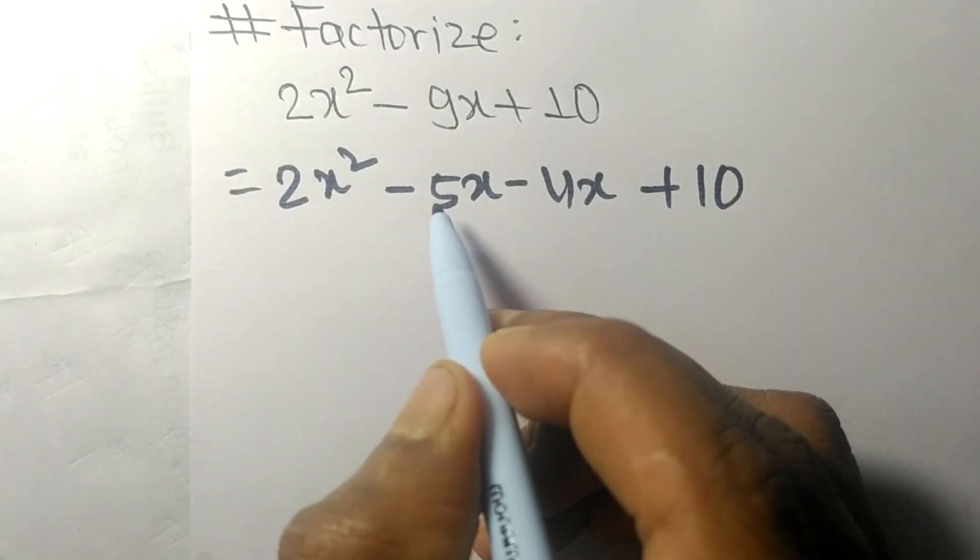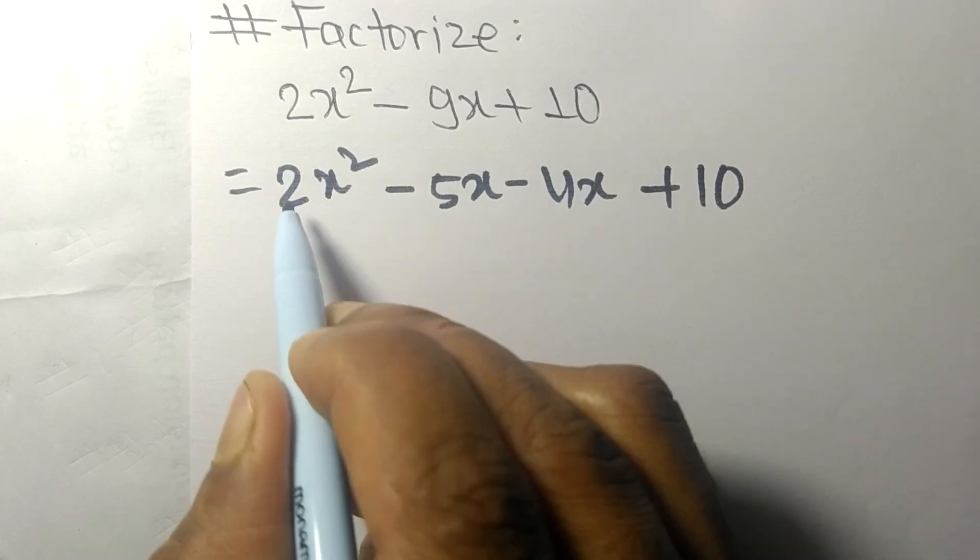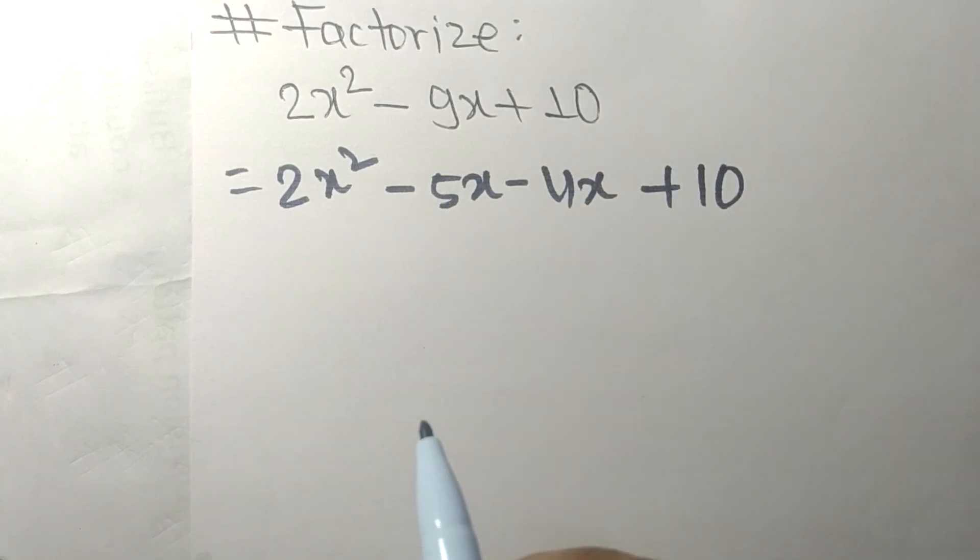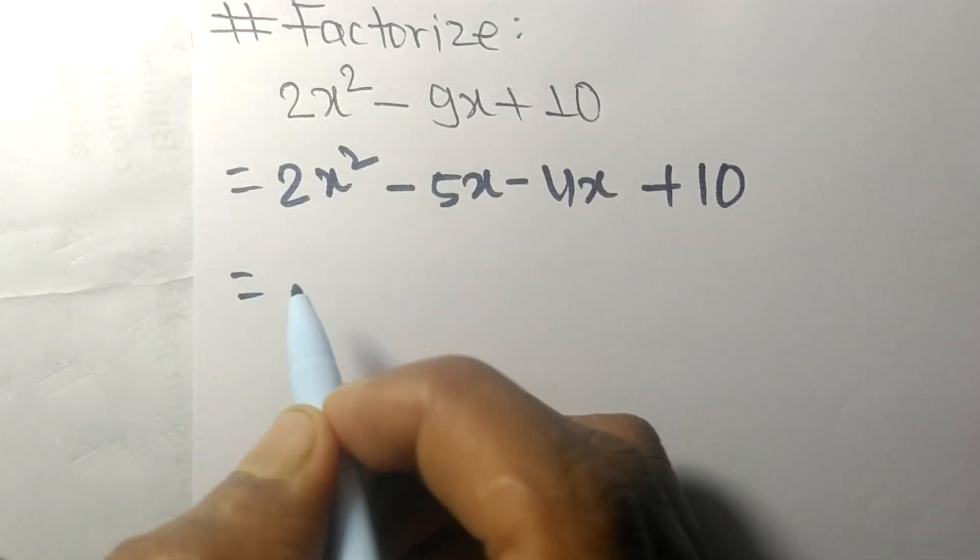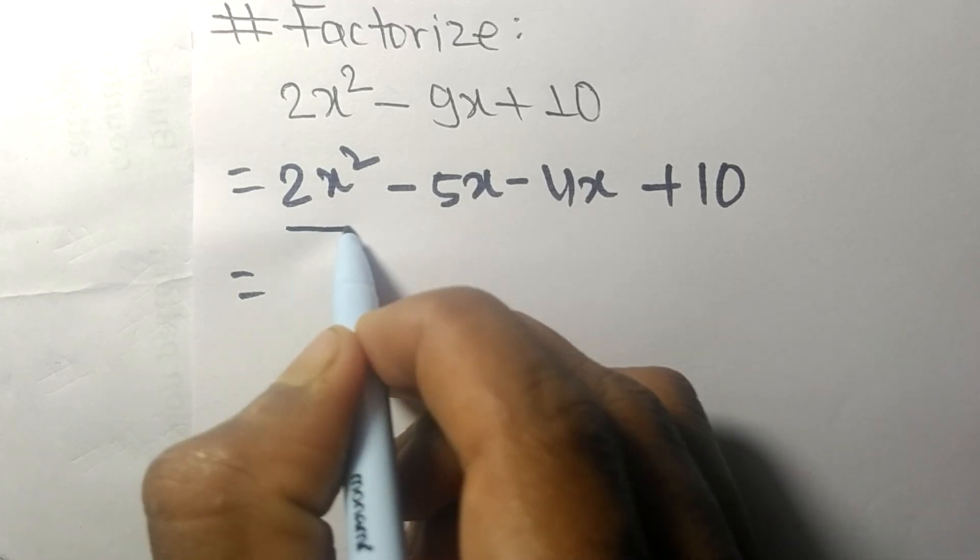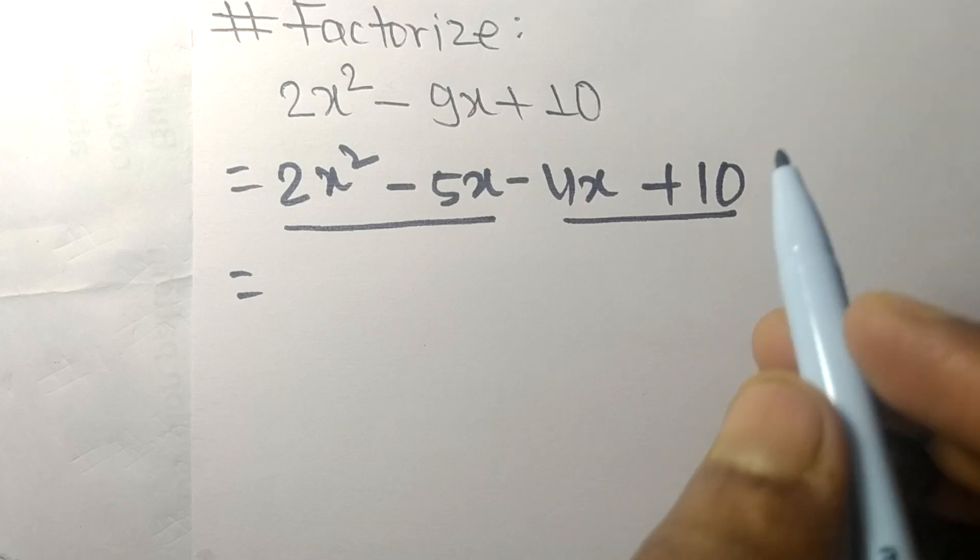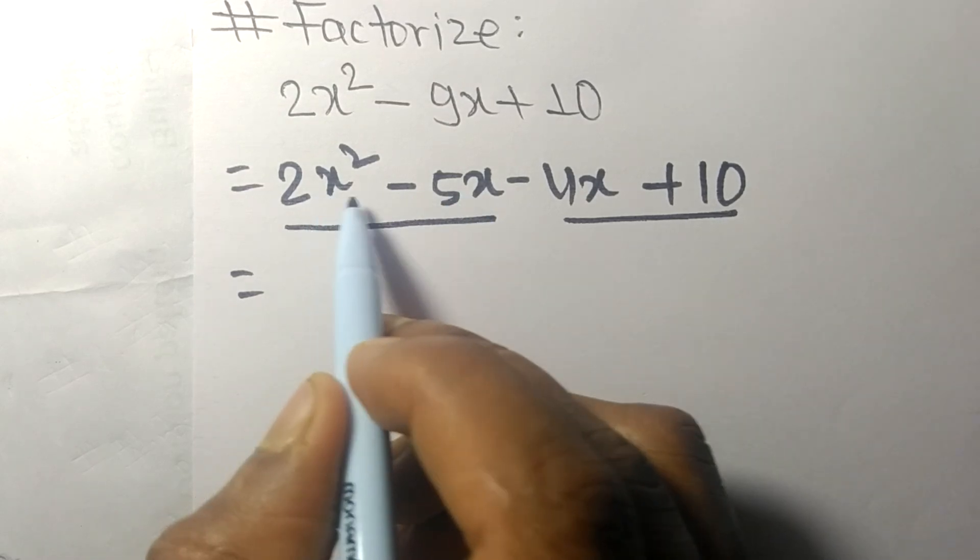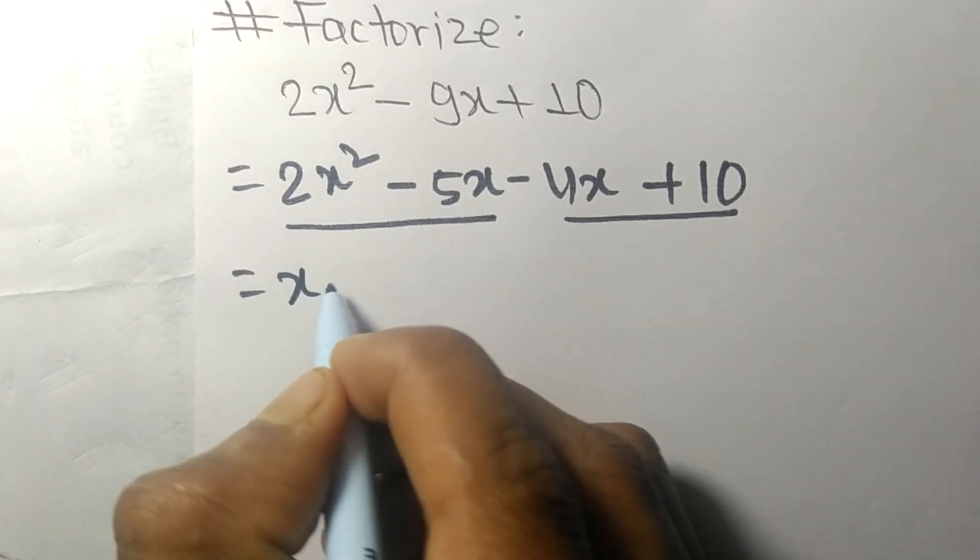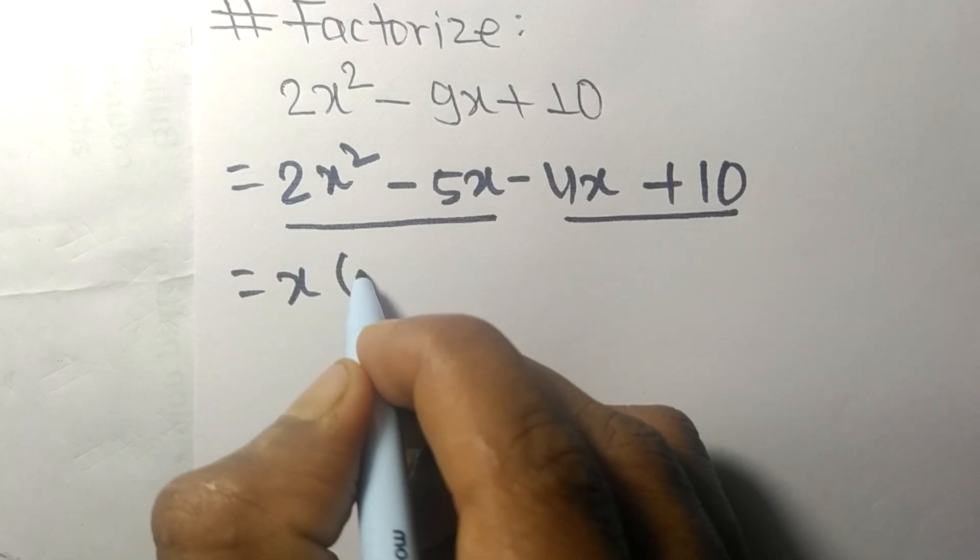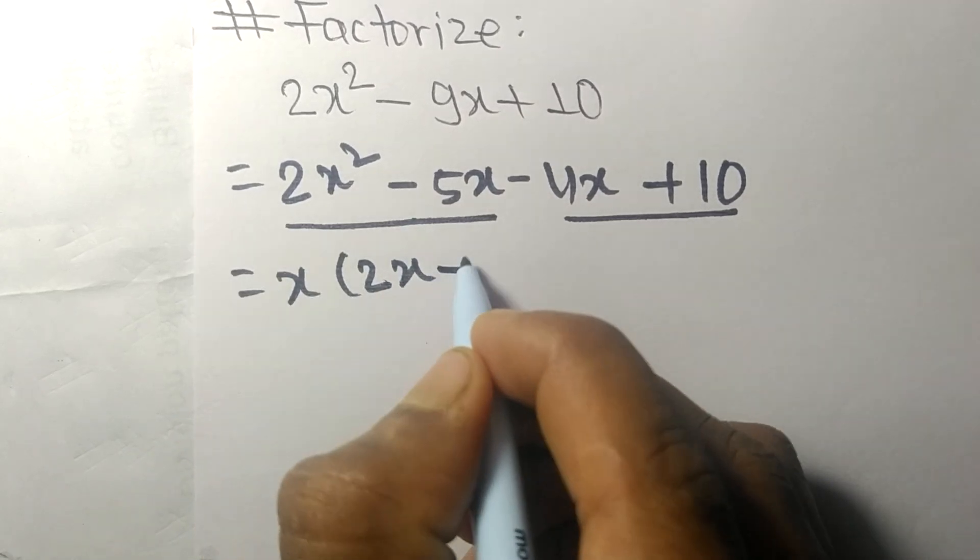Now we separate the first two terms and the last two terms. The common factor in the first two expressions is x, leaving 2x - 5. The common factor in the last two expressions is -2, also leaving 2x - 5.